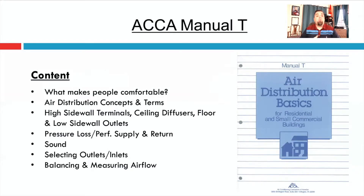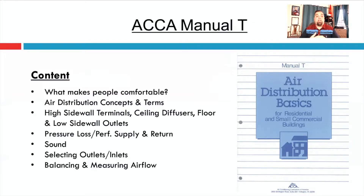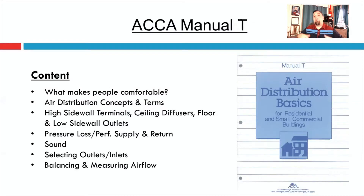The rest of the manual really dives into details on high sidewall terminals, ceiling diffusers, floor and sidewall outlets, what kind of pressure loss you get with these devices, and the performance of supply and return. Obviously sound levels, how to select inlets and outlets, and then of course balancing these and measuring airflow. That's not Manual B — which we talked about a few months ago covering the whole duct system — just one register. That accumulated process would be followed in Manual B.